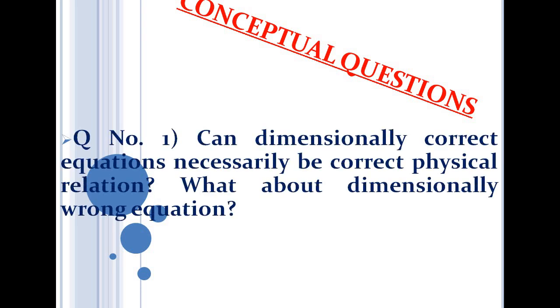Now we will discuss some conceptual questions. The first question is: can a dimensionally correct equation necessarily be a correct physical relation? Think about this. And the second question is: what about a dimensionally wrong equation?